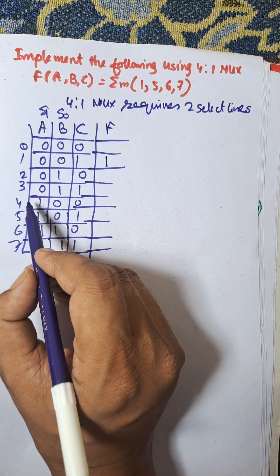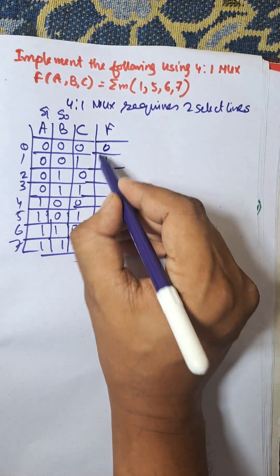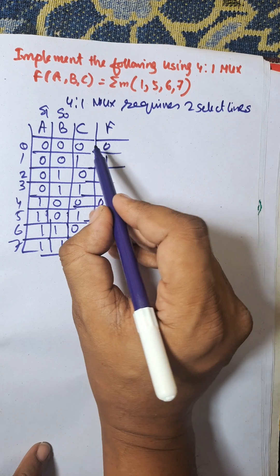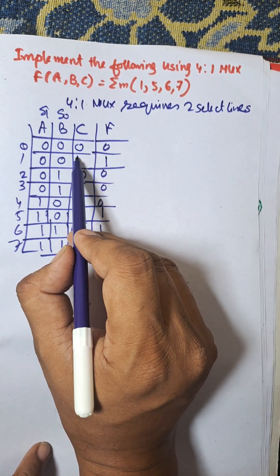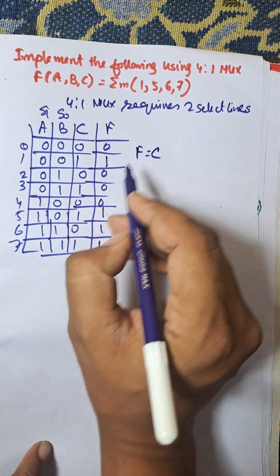This is 1, this is 5, and this is 6 and 7. Remaining positions are considered as 0. Now 0 is copied to C and 1 is copied to F, that is F equal to C.